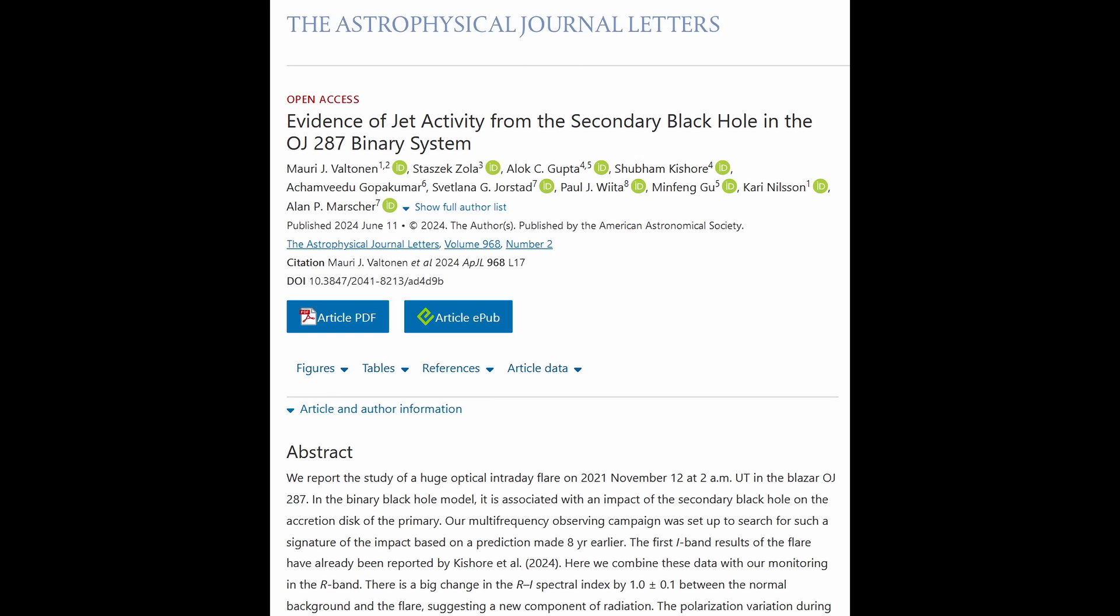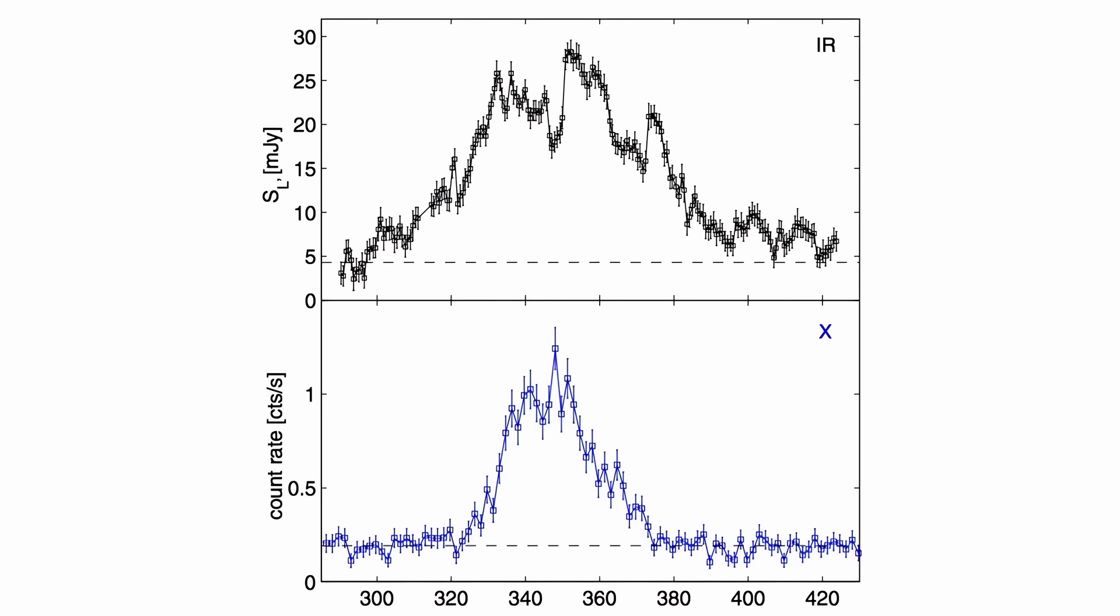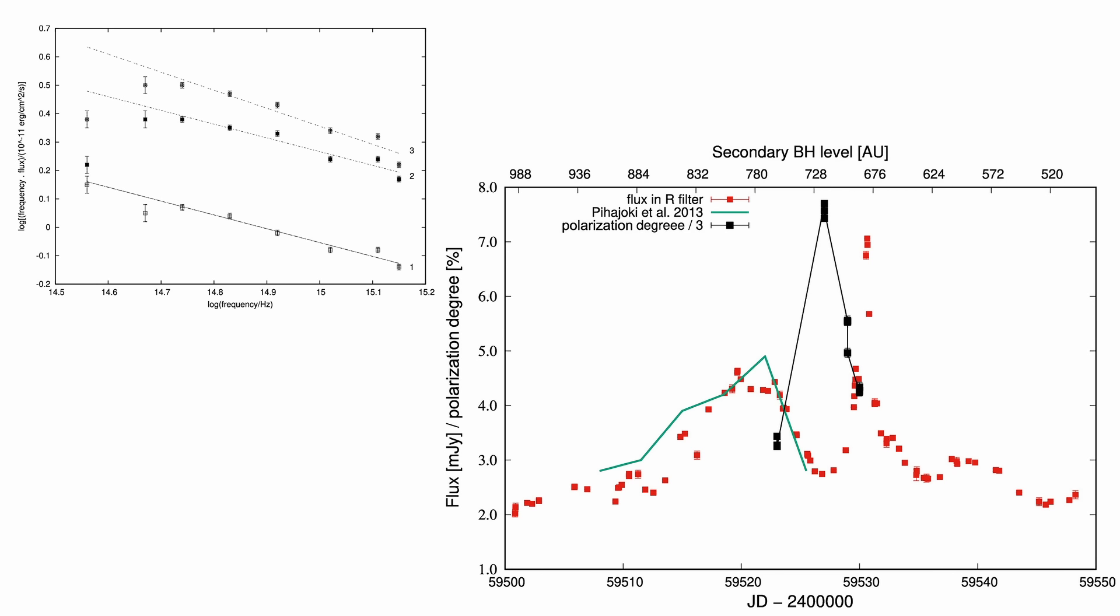One interesting aspect of the paper is that the observations of a flatter spectrum during the flare in the R-band, which is the visible light, was unexpected and not typical of what was previously observed and theorized for such events in OJ287 or similar AGNs. Typically when astronomers observe flares or intense emission events in AGNs like OJ287, they expect to see changes in the intensity of light across different wavelengths or frequencies. These changes often result in spectra that are steeper where intensity decreases more rapidly with increasing frequency because of the dominance of certain emission processes such as thermal radiation or line emission. In contrast to the expectation, the flare observed in OJ287 exhibits a flatter spectrum during the R-band observations. A flatter spectrum means that the intensity of light varies less with frequency.